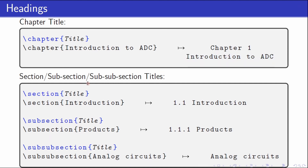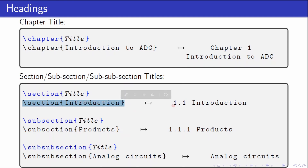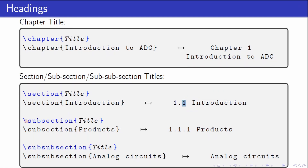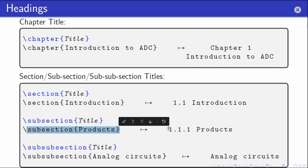To create subheadings we use the \section command with the title. Here is an example showing how to create a subheading called 'Introduction'. You can see that the first number points to the chapter number, and the next number points to the hierarchy level below the chapter. To go further down under this section, one can use the \subsection command. Here is an example creating 'Products' as a sub-subheading under the 'Introduction' subheading, with the output shown.